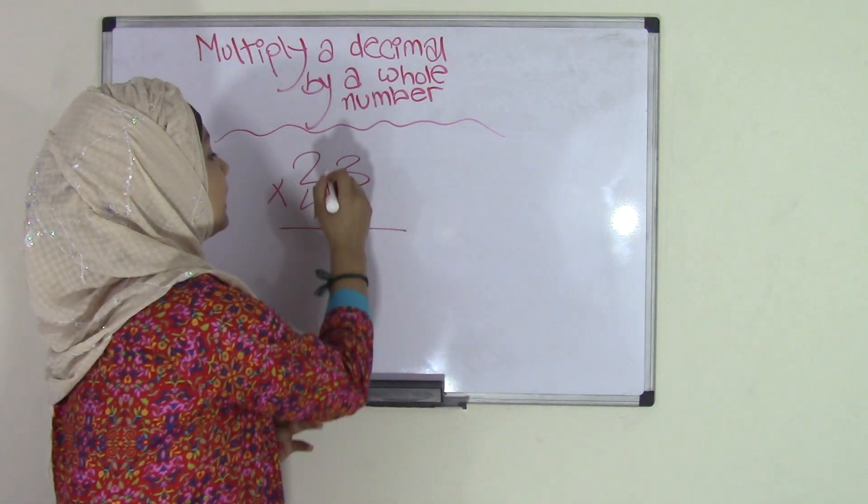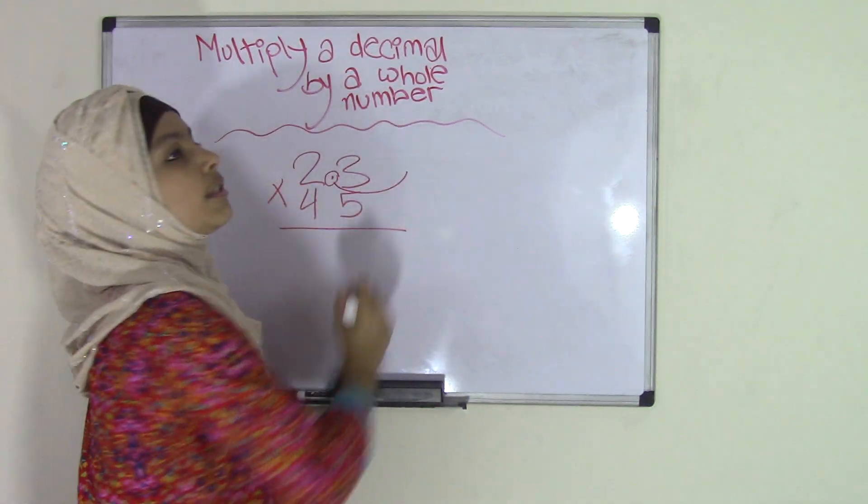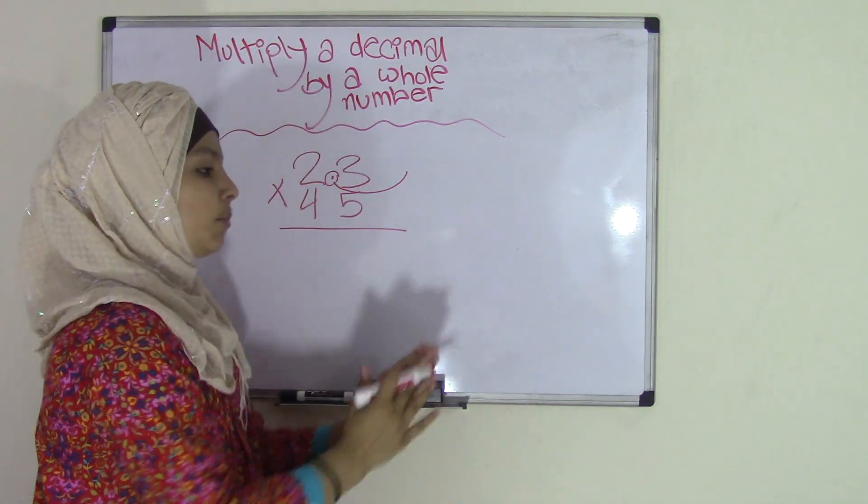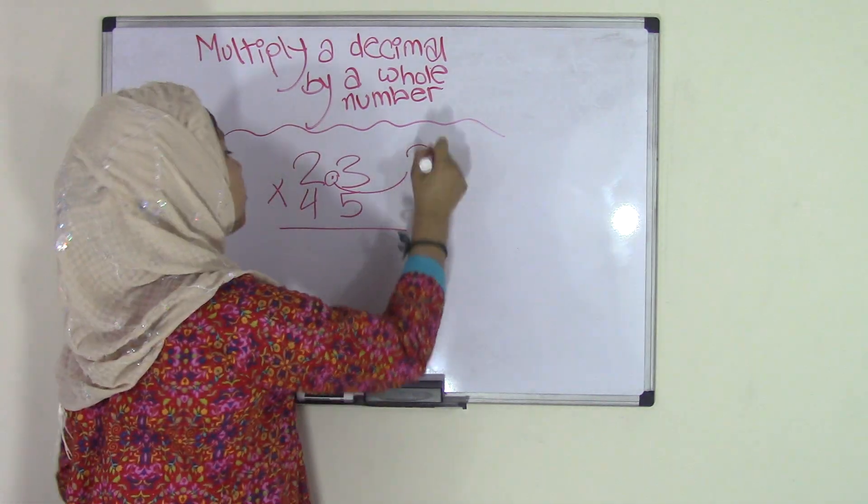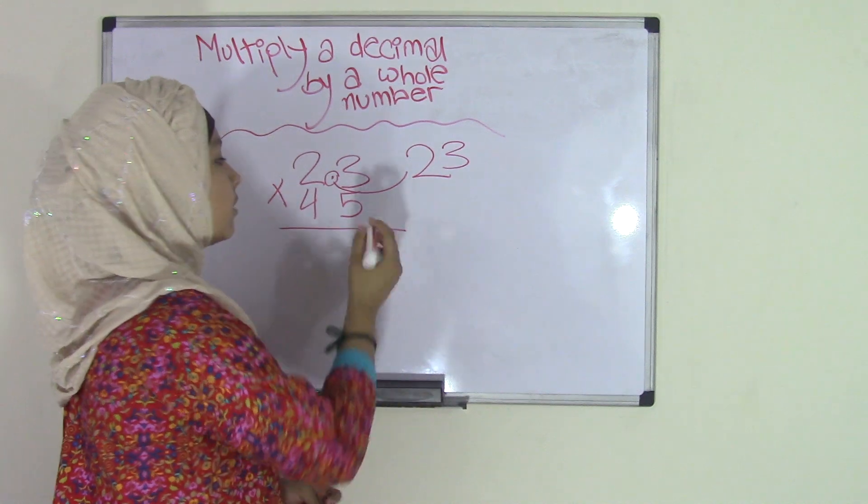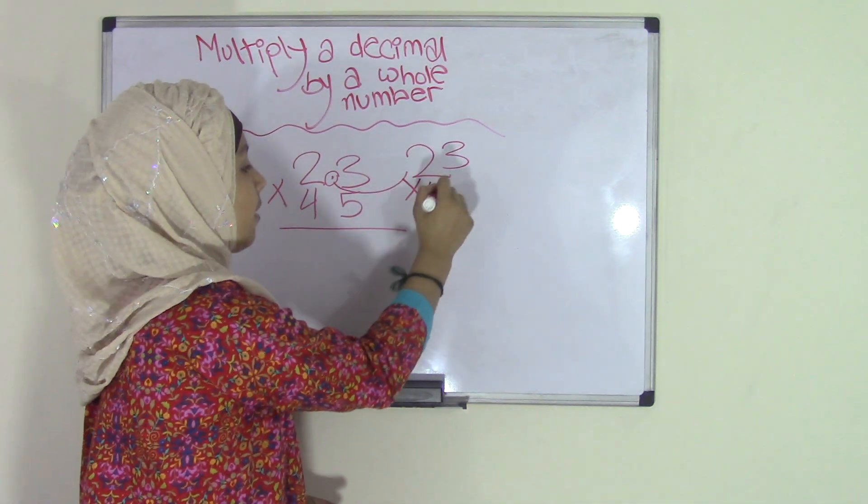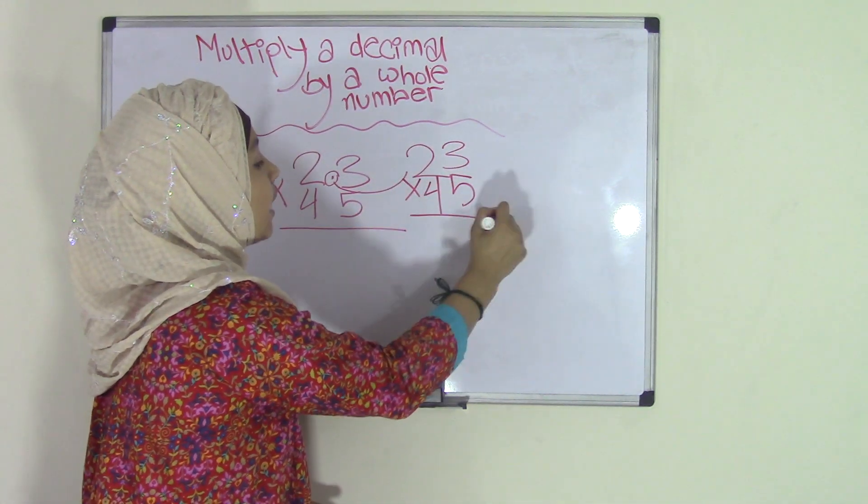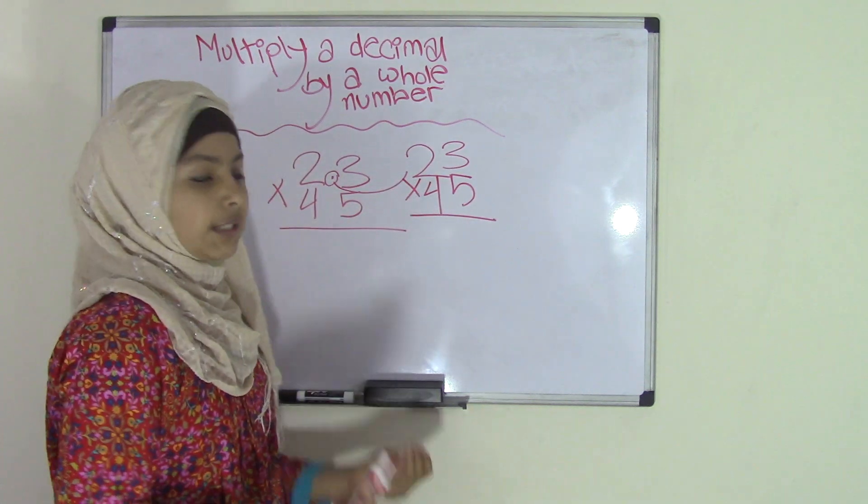All you have to do is take this decimal point and just put it to the side. 2.3 has now officially become 23. So, all you have to do is 23 times 45. All we have to do now is do this simple multiplication.